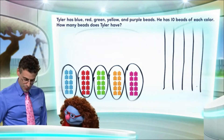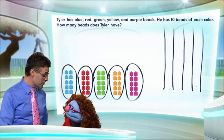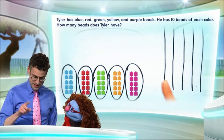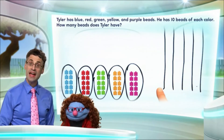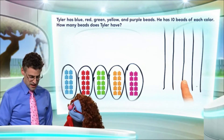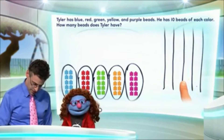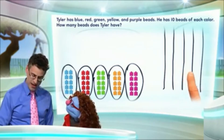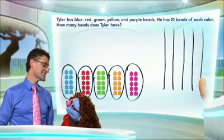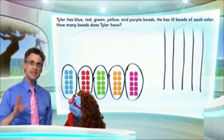Now we get to do something really cool — we're going to count by tens, because each one of these is tens. I'll start off and then I want you to come in. So what's 10 and 10? That's 20. And then another 10 — so it's 10, 20, 30. Then comes 40, and you know what comes next? 50! That's exactly right. So the answer is Tyler has 50 beads in all.